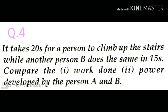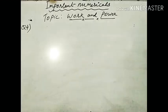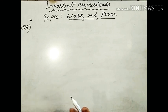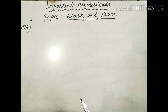Question four: it takes 20 seconds for person A to climb up the stairs, while person B does the same in 15 seconds. Compare the work done and the power developed by persons A and B.